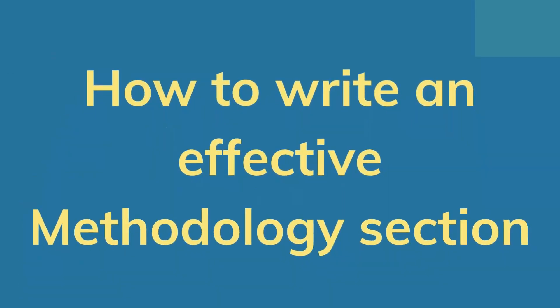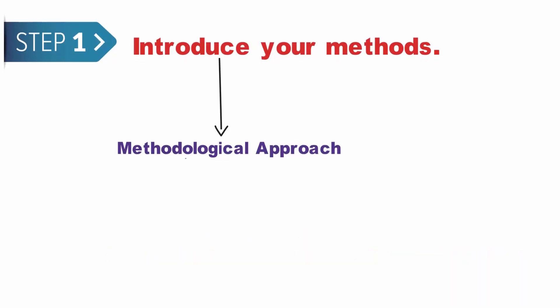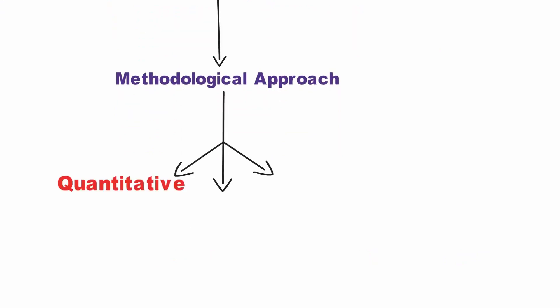Now going to the main topic, how to write an effective methodology section. Step 1: Introduce your methods. Introduce the methodological approach used in investigating your research problem. Your methodological approach can either be quantitative, qualitative, or mixed methods.